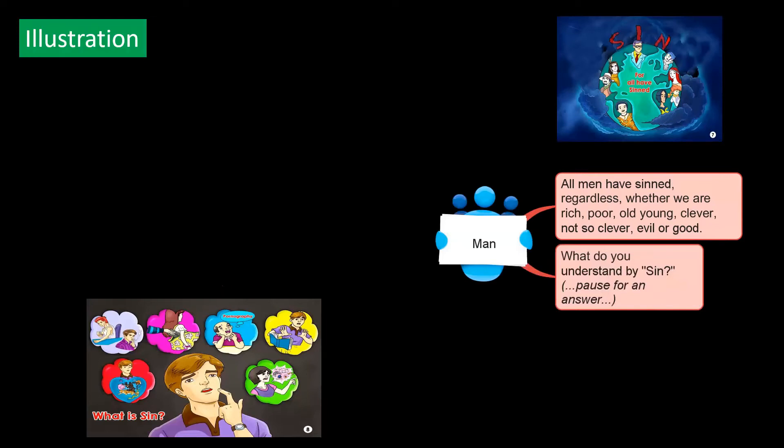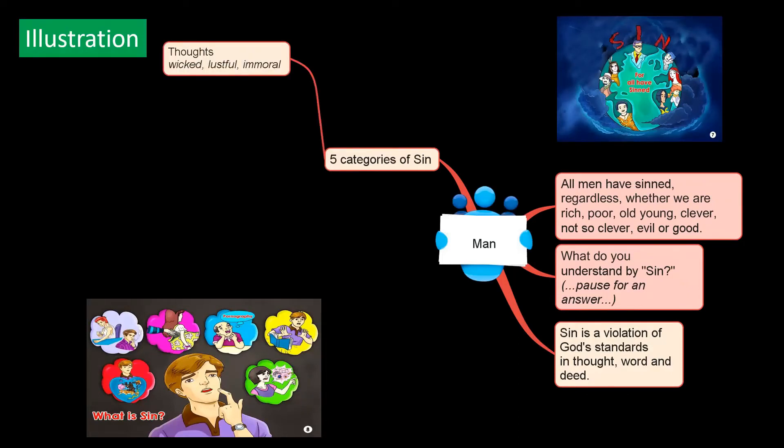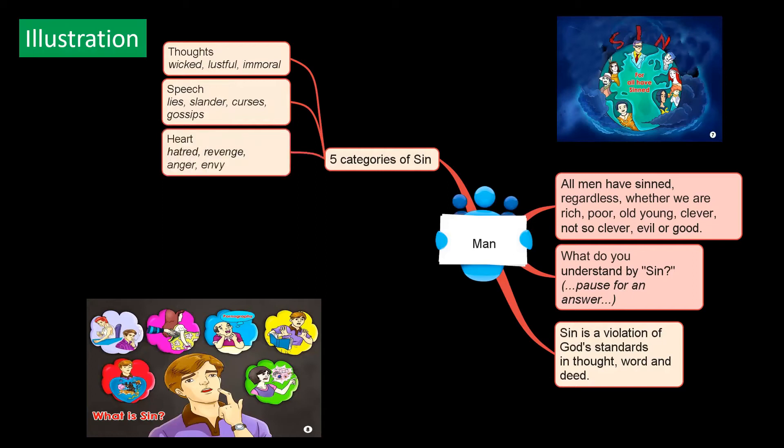Now, what do you understand by sin? Sin is a violation of God's standards in thought, word and deed. Actually, there are five categories of sin. We could sin in our thoughts: wicked thoughts, lustful thoughts, immoral thoughts. Or we could sin in our speech: lies, slander, curses or gossip. Or we could sin in our hearts, harboring hatred, revenge, anger, envy, resentment.